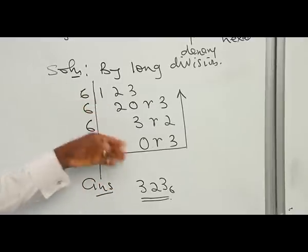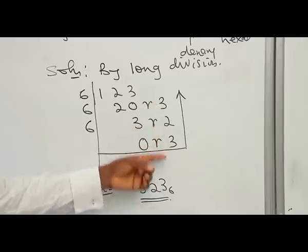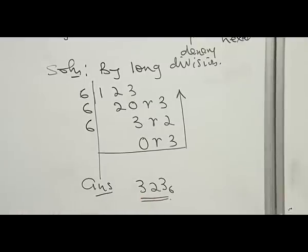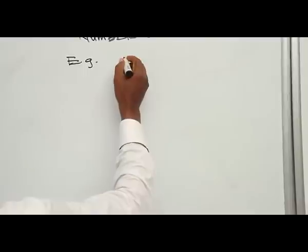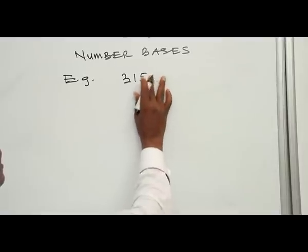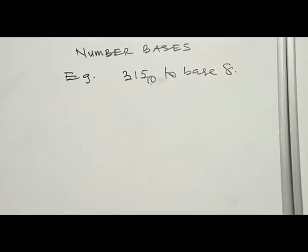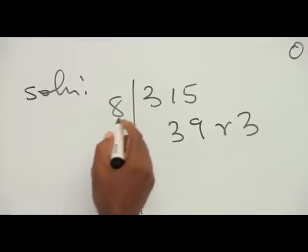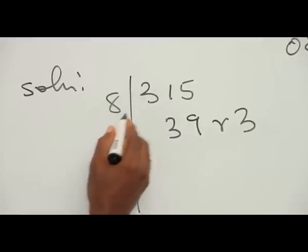Let us take another example to make it clearer. Let's say we have the number 315 in base 10 to base 8. Another name for base 8 is octal. The solution: you write 315, put your division sign, and put 8, meaning you are dividing 315 by 8.